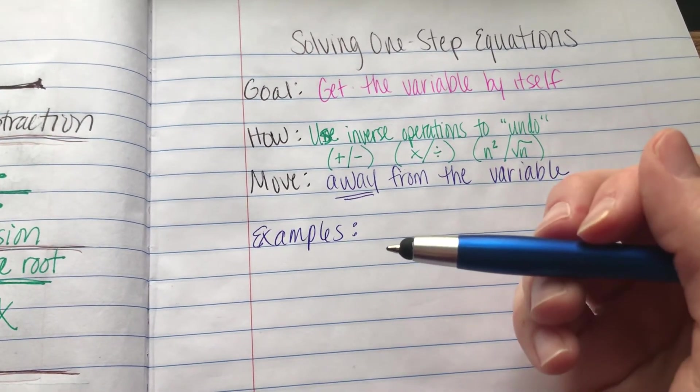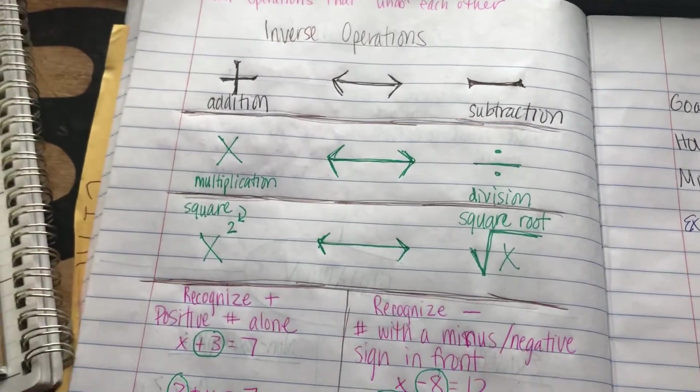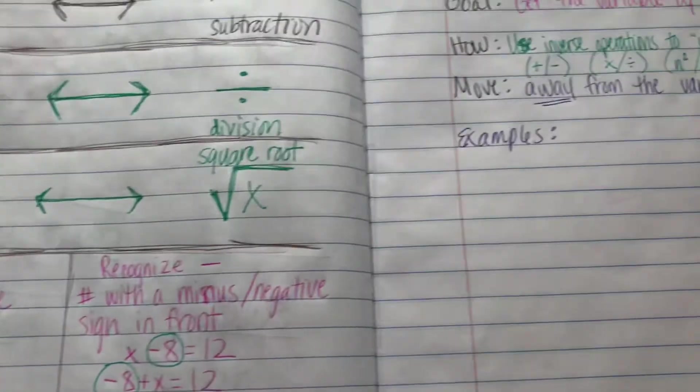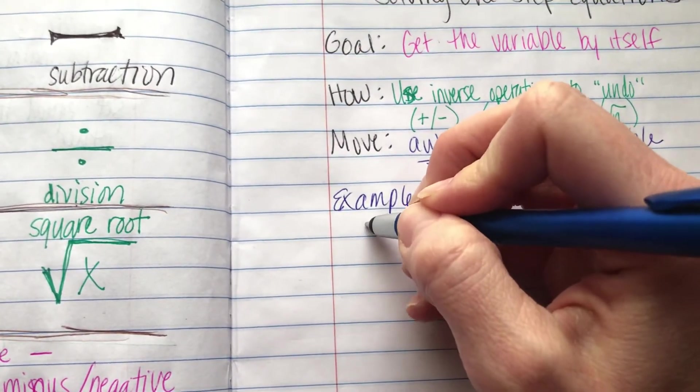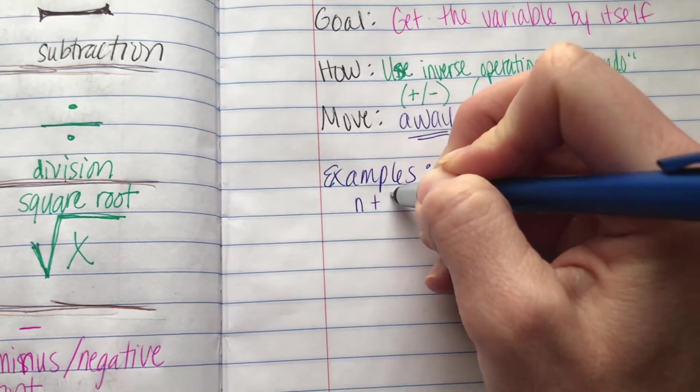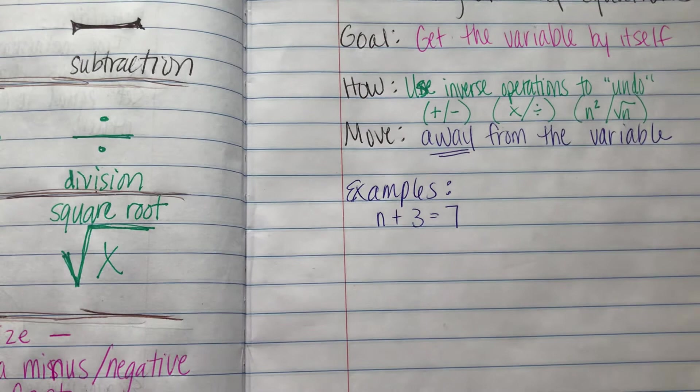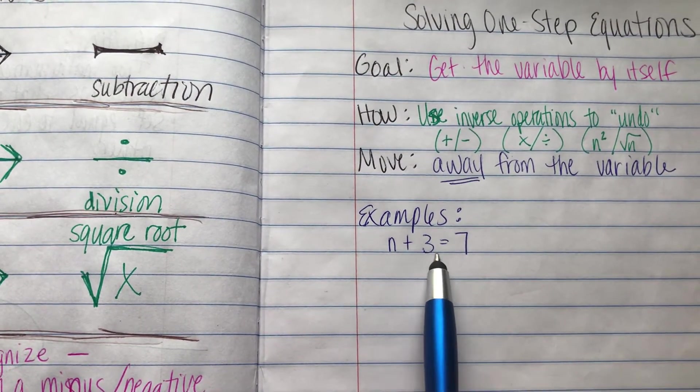So let's start with the most basic kind. Remember that we talked about how to recognize addition. So we're going to do some addition examples. Let's say we have something like n plus 3 equals 7. I can recognize that that's an addition problem because it has a positive number here with a plus sign in front of it.